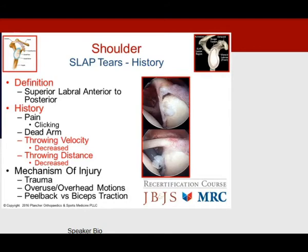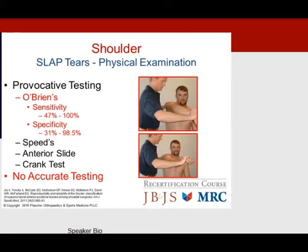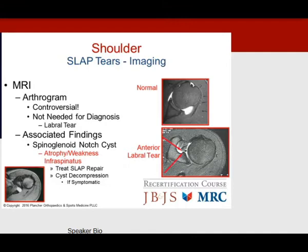SLAP tears — superior labral anterior-posterior tears — present with clicking, a dead arm, decreased throwing velocity, and decreased distance. This is the overhead thrower with a peel-back or biceps traction injury. Provocative testing like O'Brien's has unclear sensitivity and specificity, so clinical acumen is essential.